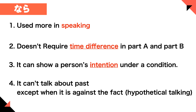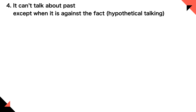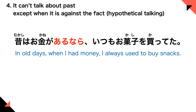Number four: nara can't talk about the past except when it is against the fact — hypothetical talking. You can't just talk about a past fact; it has to be against the fact. For example, to say 'in the days when I had money, I always used to buy snacks,' you can't say 'okane ga aru nara' — you should use 'attara' instead. So you have to use tara instead of nara when talking about a regular past fact.